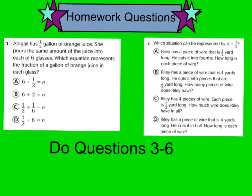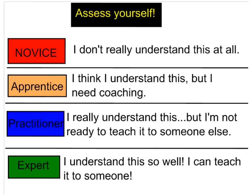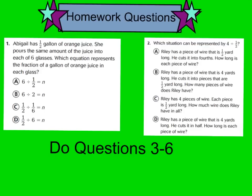Go ahead and turn your page to the back side. Answer questions one and two regarding what our lesson is about, then do three through six for review questions. Don't forget — somewhere at the top of your page, write down if you're a level one, novice; two, apprentice; three, practitioner; or four, expert. We will check these questions tomorrow in class and do lots more practice. Have a great night. Bye-bye.